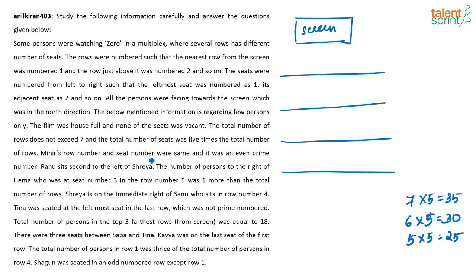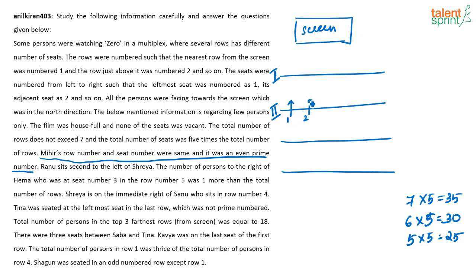Mihr's row number and seat number are the same and it was an even prime number. The only even prime number is 2. So Mihr is sitting in seat number 2 in row 2. Definitely there are at least 2 rows, and Mihr is in seat 2 of row 2. In row 2 there are at least 2 seats, with someone else in seat 1.